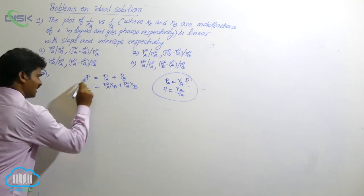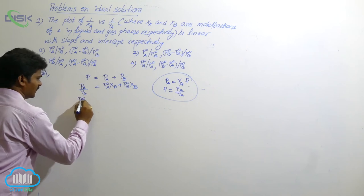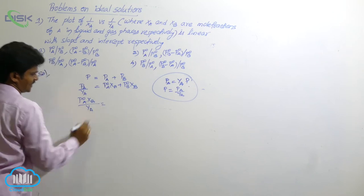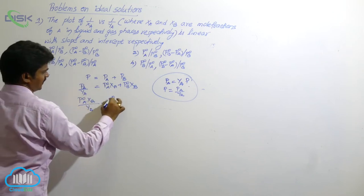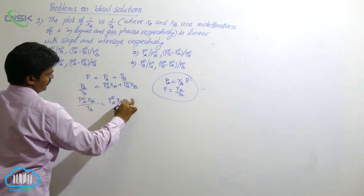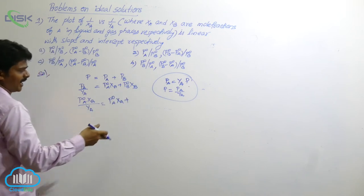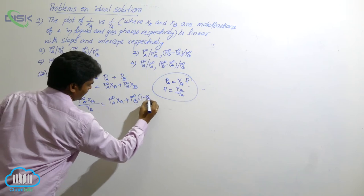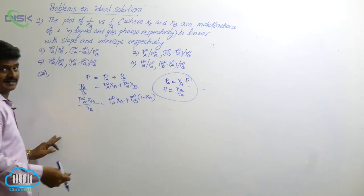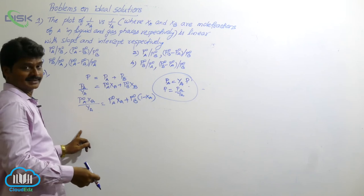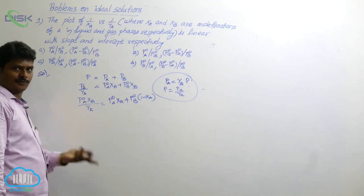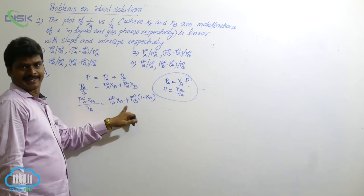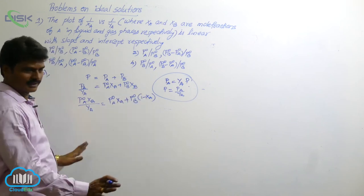Now, express PA in the numerator also. PA means P naught A, XA by YA. P naught A, XA plus P naught B, how to write? This XB, how to write? P naught B into 1 minus XA. Can we write it like that? Yes we can write, because the sum of mole fractions in the liquid phase is equal to 1. That's why XA plus XB is equal to 1.